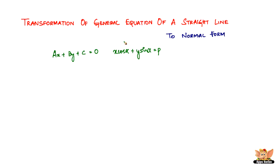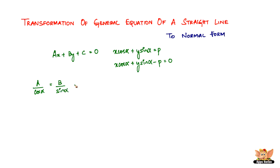If you take a closer look, both forms represent the same thing. We just write it as x cos α plus y sin α minus p equals zero. So a is cos α, b is sin α, and c is negative p. Since the forms are equivalent, we can write a over cos α equals b over sin α equals c over negative p.